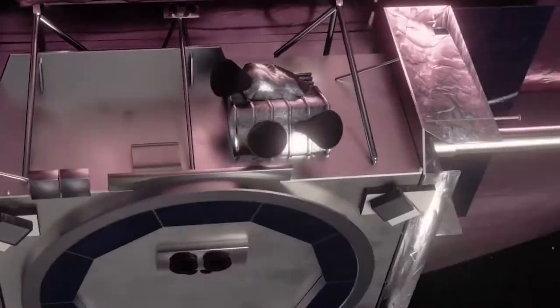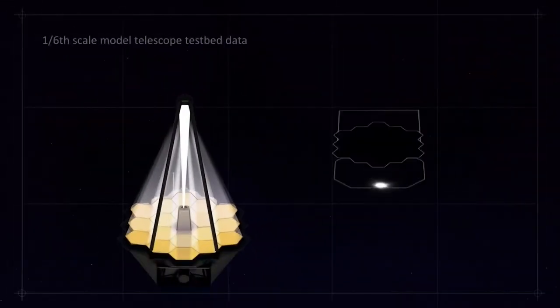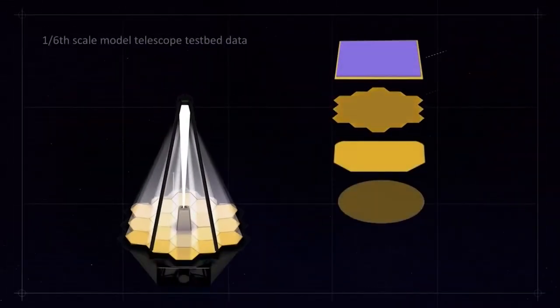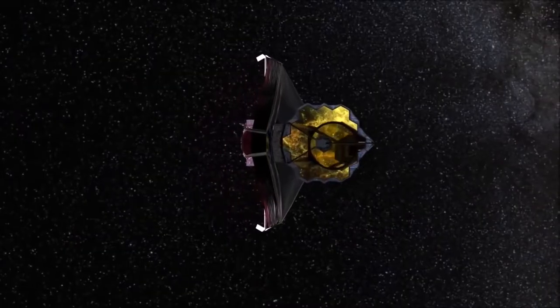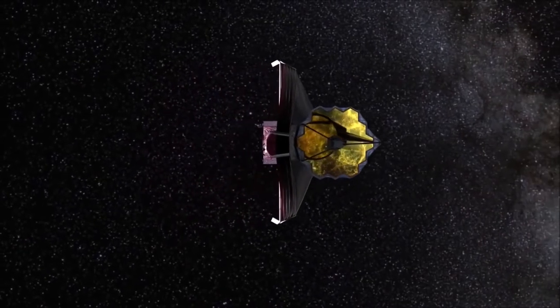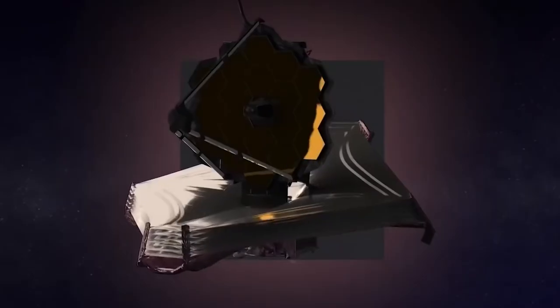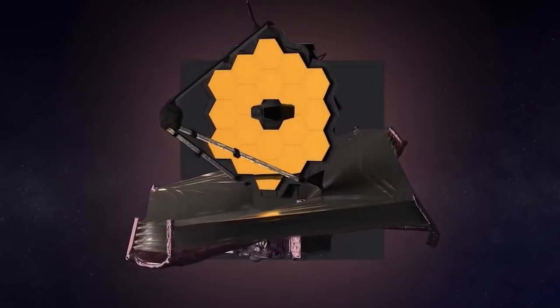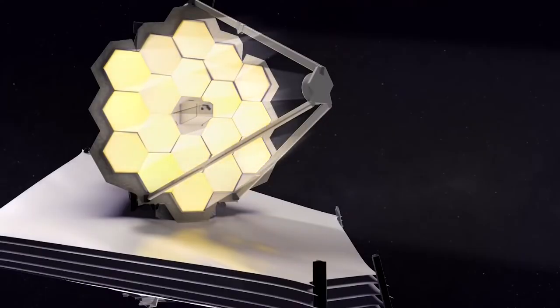But what it does have is a huge sun shield, and the telescope sits behind that sun shield. James Webb is located at a place called L2, 1.5 million kilometers away from the Earth where the Sun and the Earth are always on the same side of the telescope.